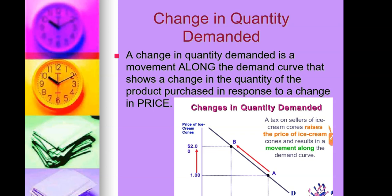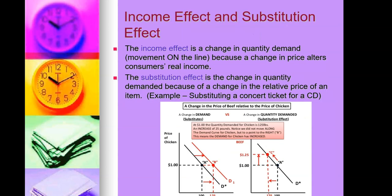From the image, this shows changes in quantity demanded — you go from point A to point B. A tax on a seller of ice cream cones raises the price, resulting in a movement along the demand curve. When ice cream was at one dollar, eight cones were sold (point A). Once the tax raised the price to two dollars, demand decreased — at point B you're now selling only four ice cream cones.